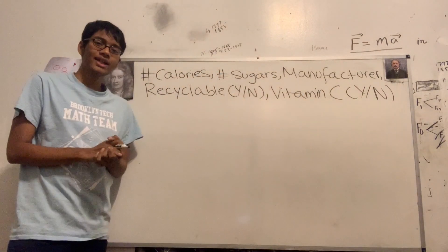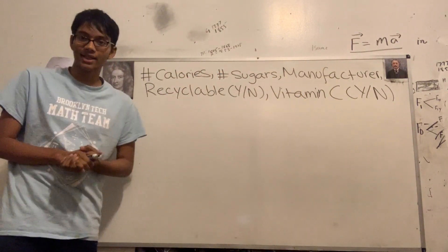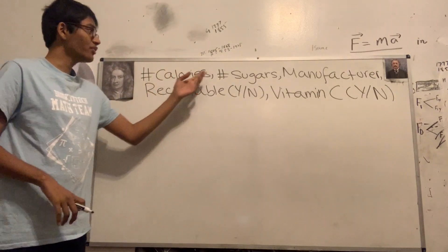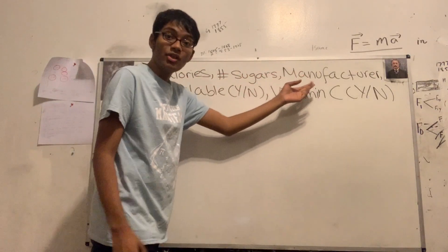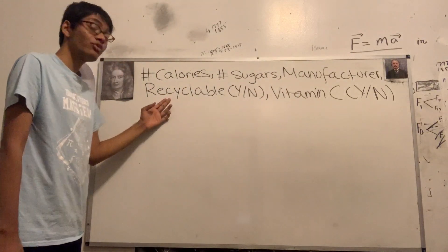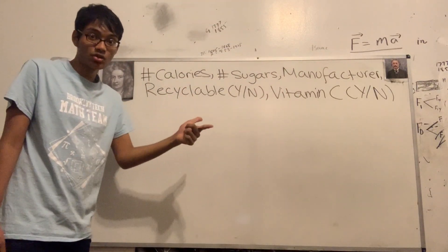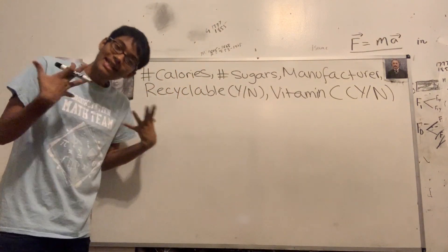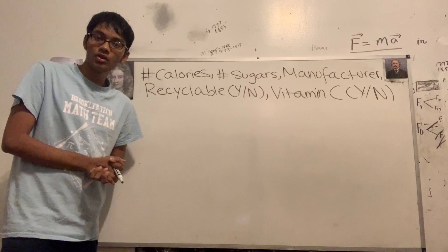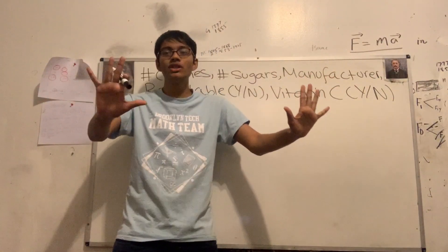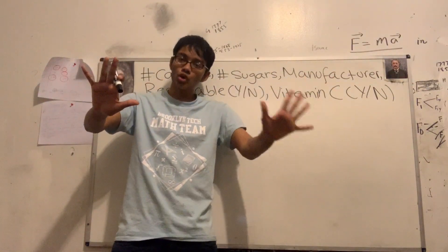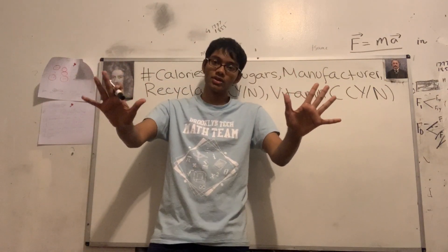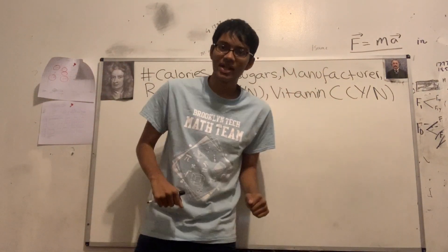Now we've written down all of the variables we'll be taking a look at for each one of the cereal boxes: number of calories, number of sugars, the manufacturer of the cereal, is it recyclable or not — which is a yes or no question — and does it have vitamin C or not — which is also a yes or no question. Now we have to classify these variables as either one of two types.